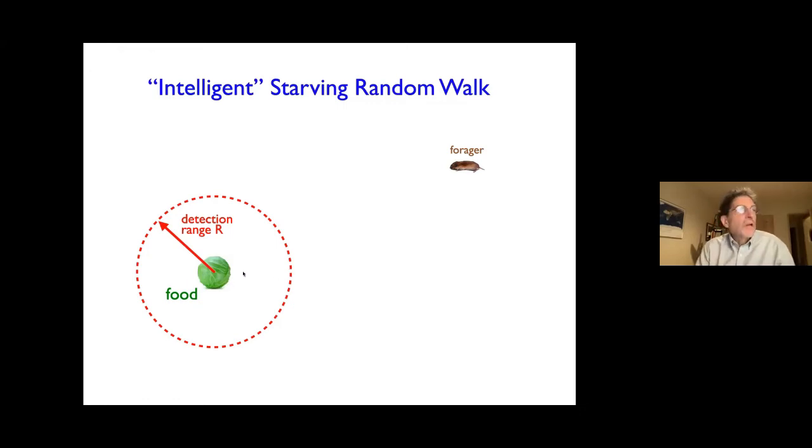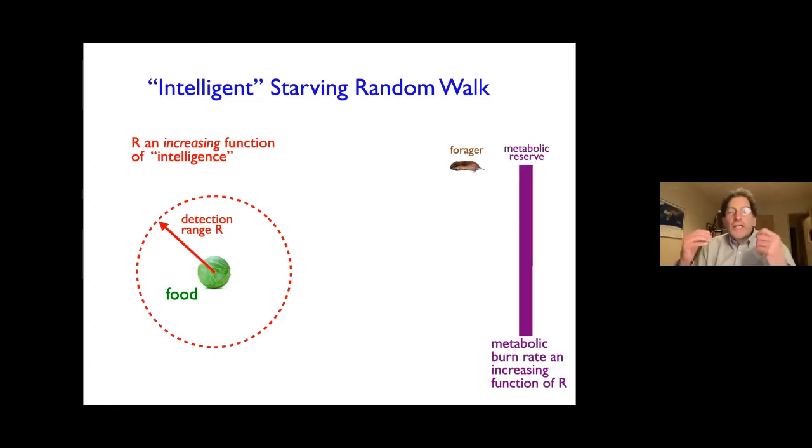And the crucial element of this model is the following fact: that this detection radius is an increasing function of this so-called intelligence. So we're not thinking about the IQ or like how it socializes or anything like this. We're only correlating intelligence with the detection radius. And the other thing about this forager is that this forager has some amount of metabolic reserves in its body. You can think of it as a gas tank which is full of gasoline. And the other feature is that in addition to the detection radius being an increasing function of intelligence, the metabolic burn rate is also an increasing function of this detection radius. So these two things are working against each other. And that's what's going to give us a non-trivial dynamics.